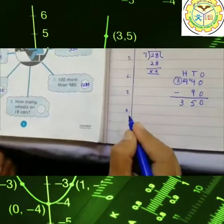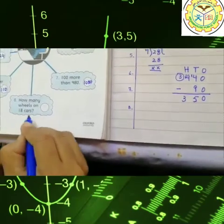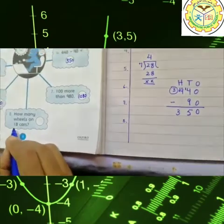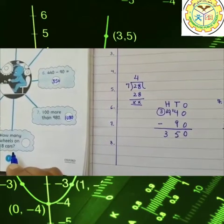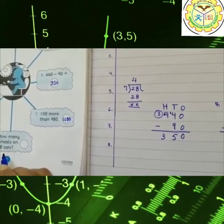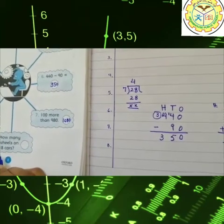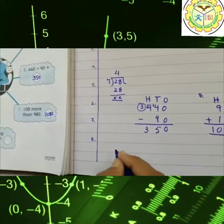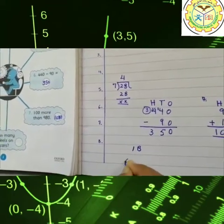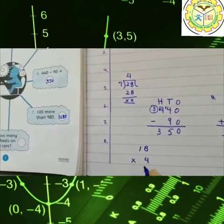And the last question, class. This is: how many wheels on 18 cars? 18 cars mein kitne wheels hote hain? Agar humein pata hoga ki ek car mein kitne wheels hote hain, to hum ab aasani se pata laga sakte hain ki 18 cars mein kitne wheels hote hain. As we know, one car has four wheels. So, 18 multiply by four.